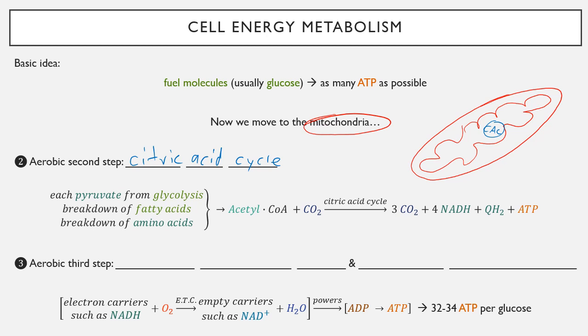What happens is that each pyruvate that we made in glycolysis comes in to the citric acid cycle. This is also where breakdown of fatty acids and breakdown of amino acids come together. If you want to break down fatty acids, there's a different first step called beta-oxidation. If you want to break down amino acids, you have to deaminate them, take the amino part out. And then you get this common molecule called acetyl-CoA.